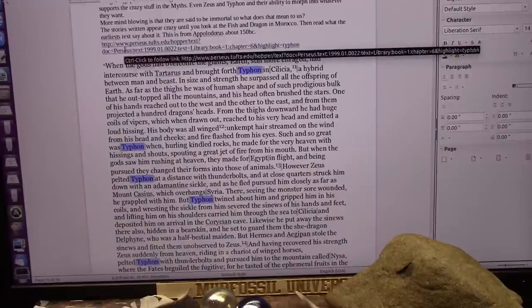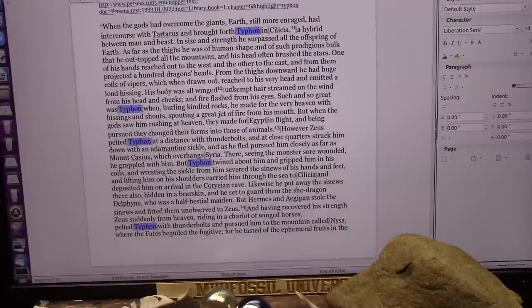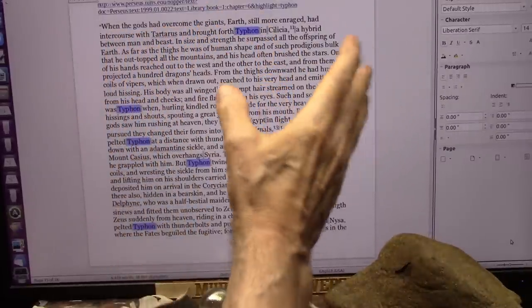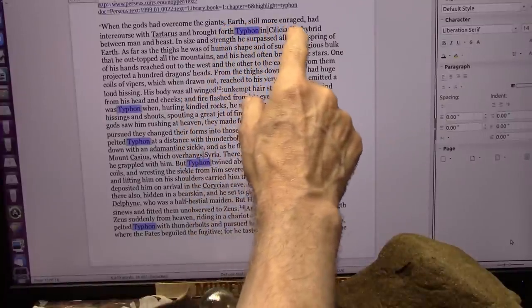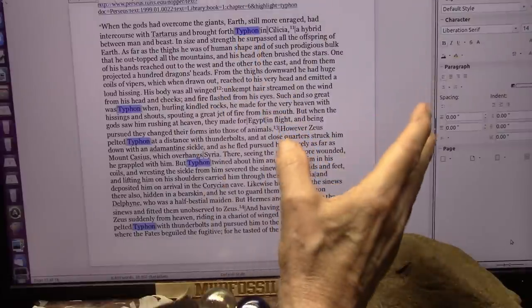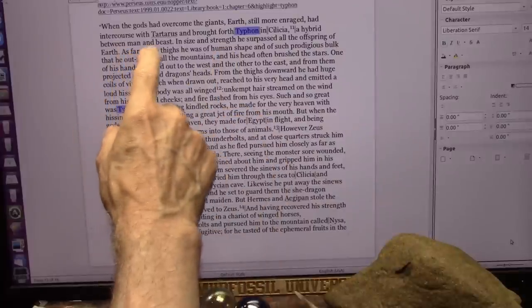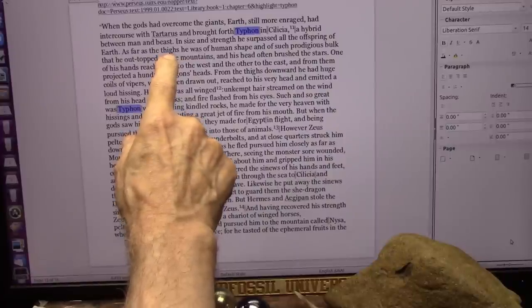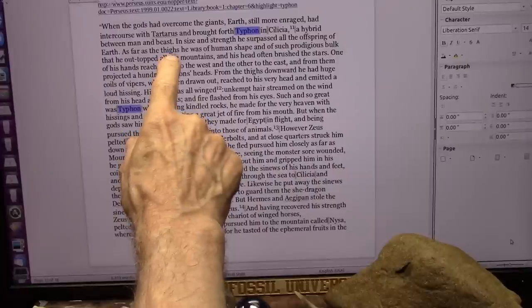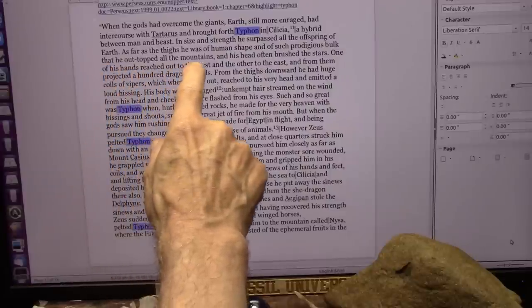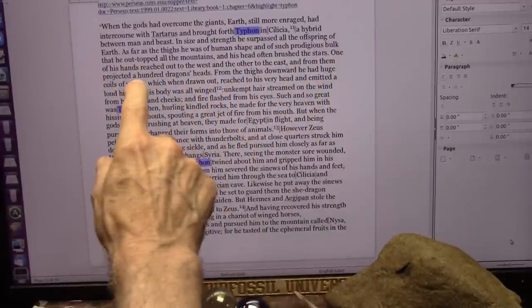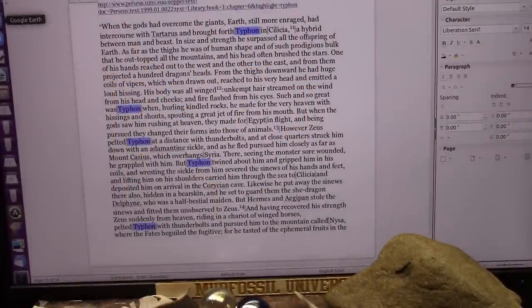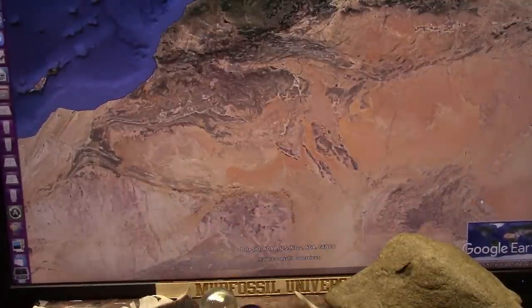I have a video about Typhon. When the gods had overcome the giants, and the giants I have minor DNA certified, Earth, still more enraged, had intercourse with Tartarus and brought forth Typhon. He's that dragon. Well, what is Typhon? He's a hybrid between a man and a beast. Size and strength surpassed all offspring of Earth. This is about his thighs. Why would they point out his thighs? As far as the thighs, he was of human shape and of such prodigious bulk that he out-topped all the mountains, his head brushed the stars. One of his hands reached out to the west, the other to the east, covered the whole entire continent. And this is, as far as I can see, this is it. Here's his thighs.